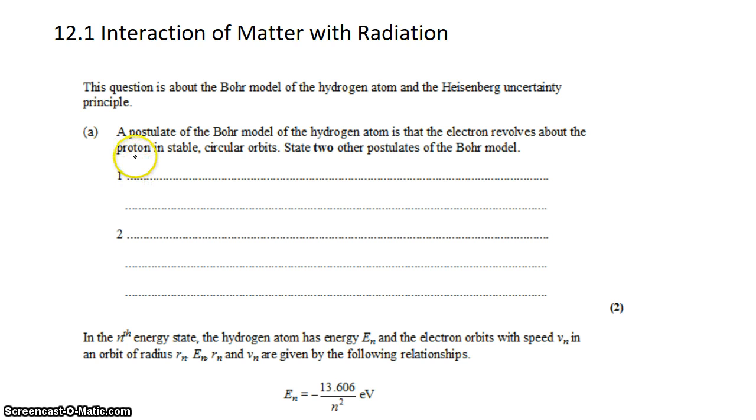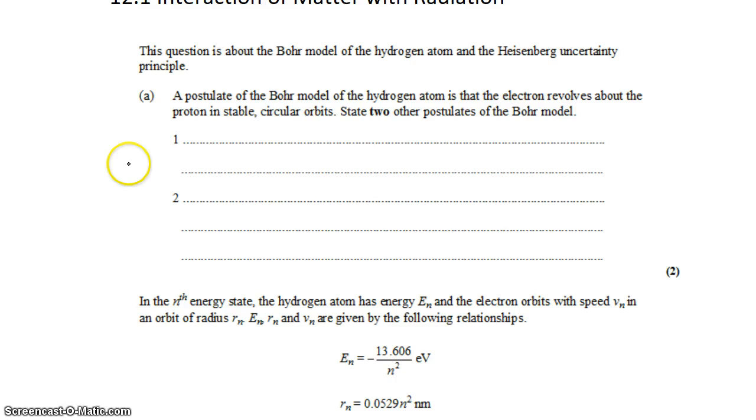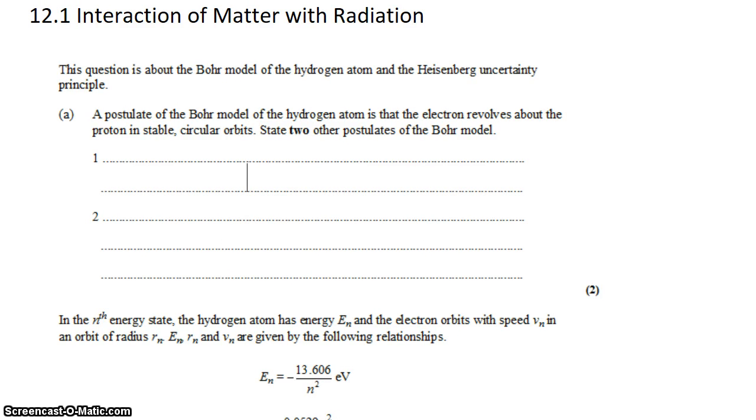In question part one, we're told that a postulate of the Bohr model of hydrogen is that the electron revolves around the proton in stable, circular orbits. I'm going to state two other postulates of the Bohr model. One of them is that electrons emit photons with energy Planck's constant times their frequency when moving down shells.